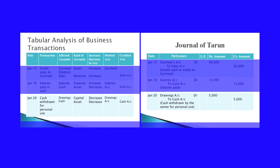Moving to January 20th: cash withdrawn for personal use by the owner. The two affected accounts are drawings account and cash. Drawings means the amount withdrawn by the owner for his own personal use — that is the amount taken from the capital, so it is affecting the capital account. Cash is going from the business, so cash comes under the asset account. Drawings will decrease the capital, and cash is also decreasing. So drawings account will be debited and cash account is credited. When capital decreases, drawings account will be debited; when asset decreases, cash account is credited. We have studied how to write the entries in the journal.